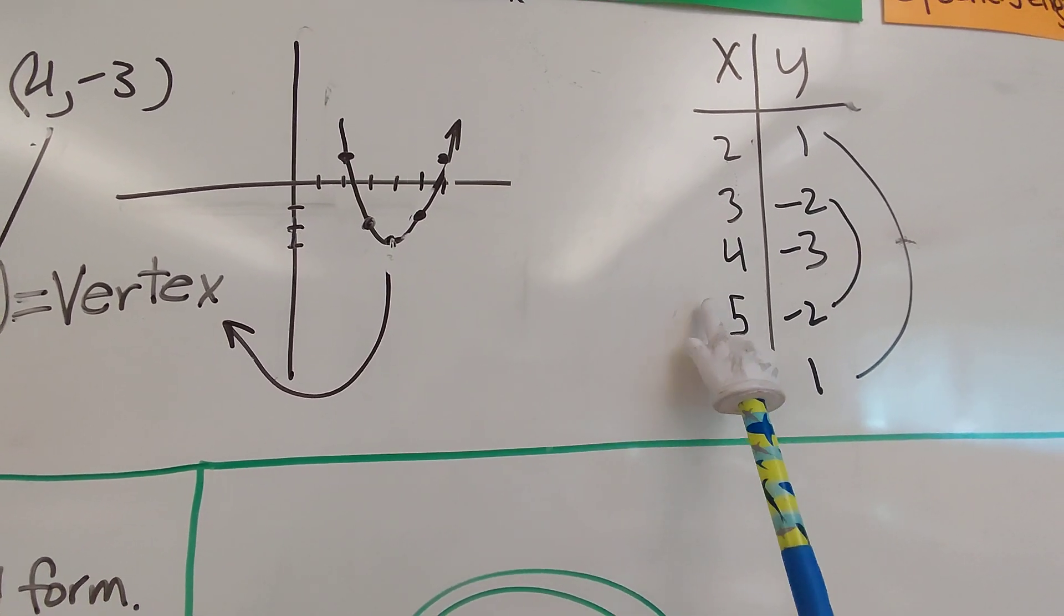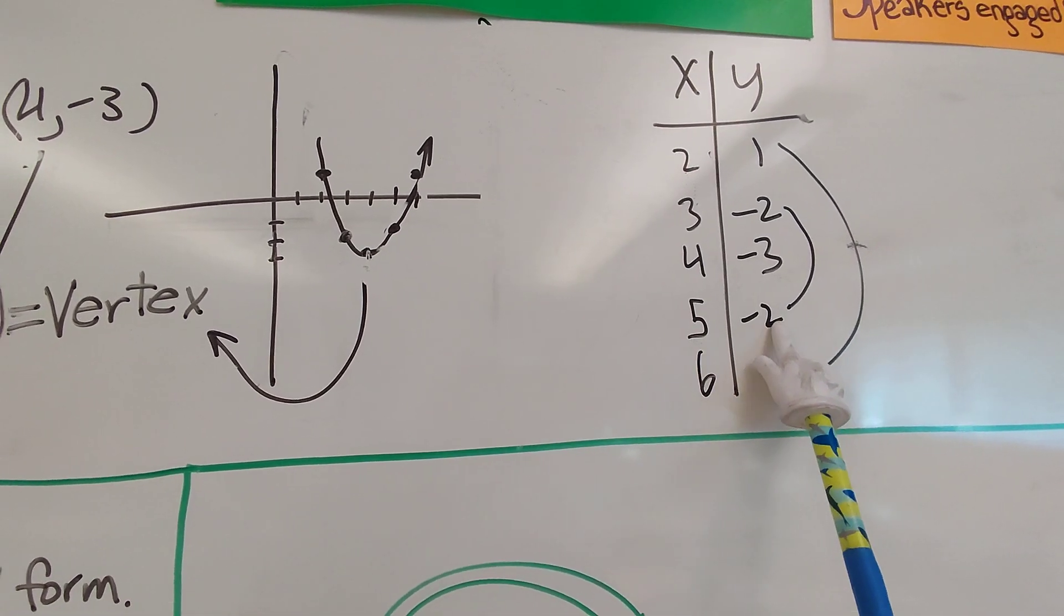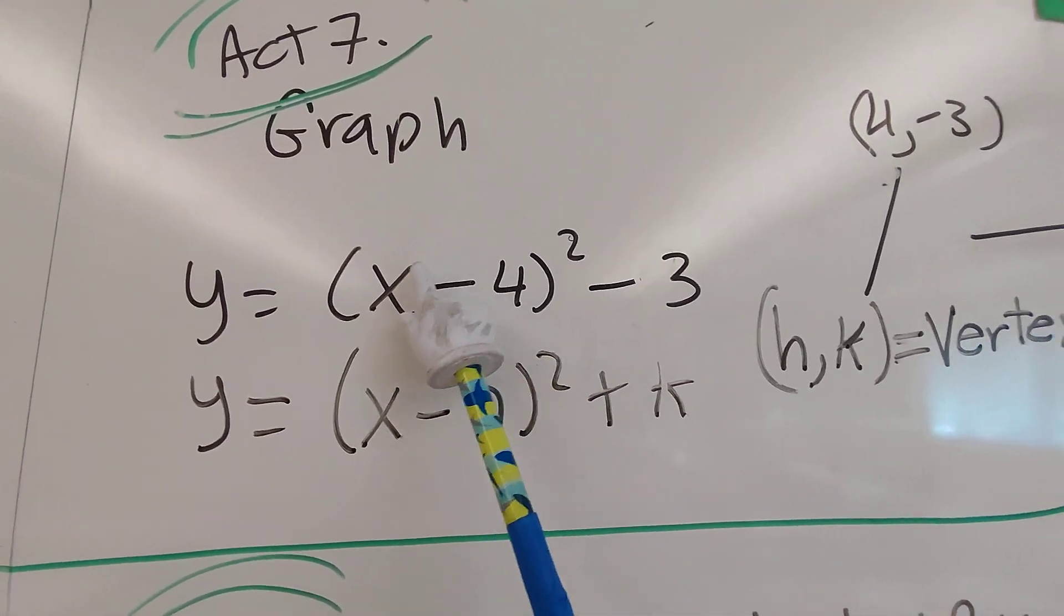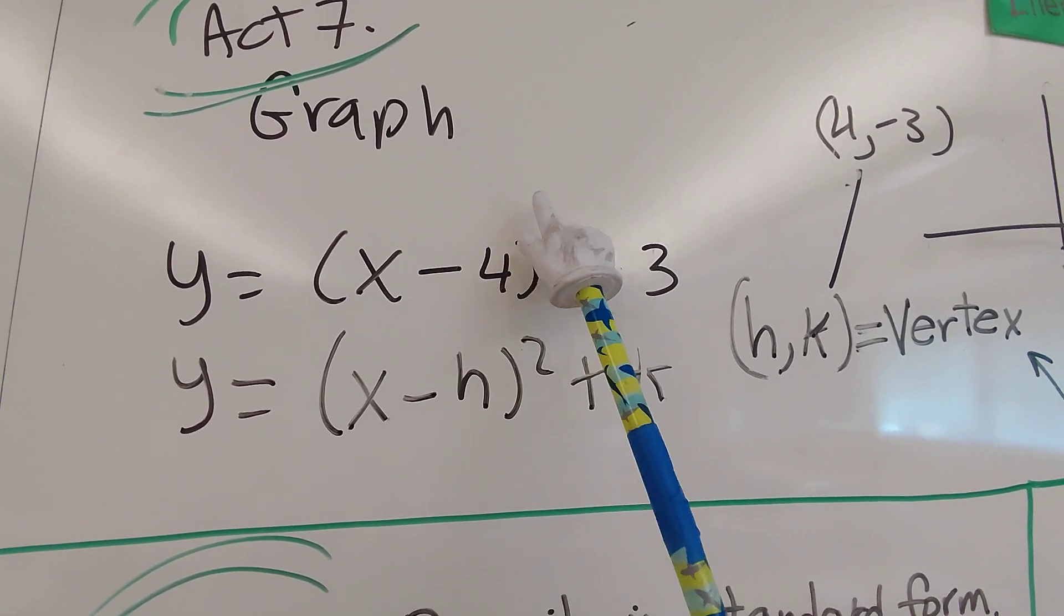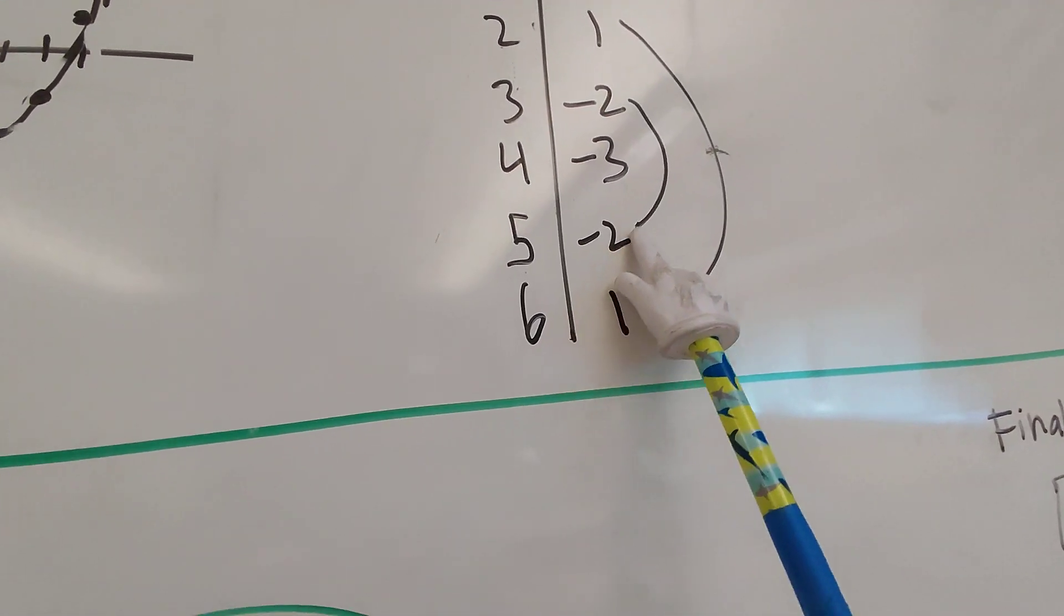So from 4, let me go to 5. If I plug in 5, what would be my y value? Let's verify. It says negative 2. So what's 5 minus 4 is 1, 1 squared is 1, minus 3 is negative 2. Verified.